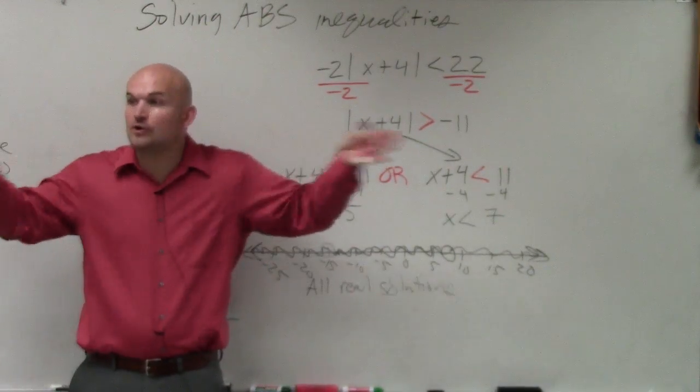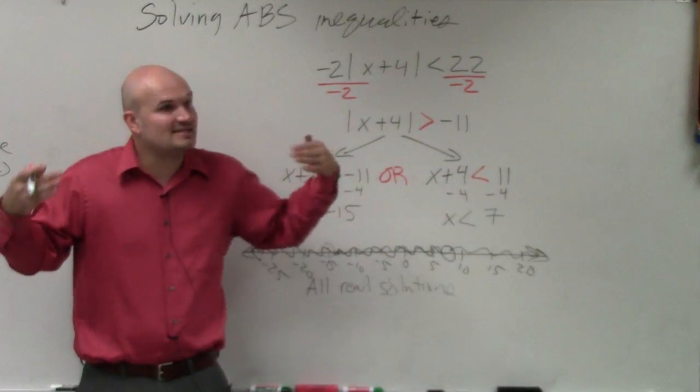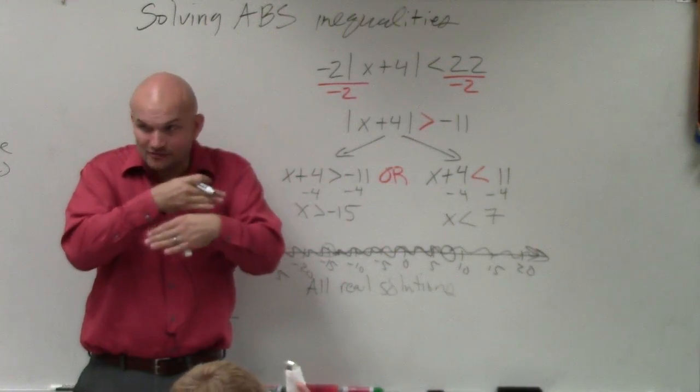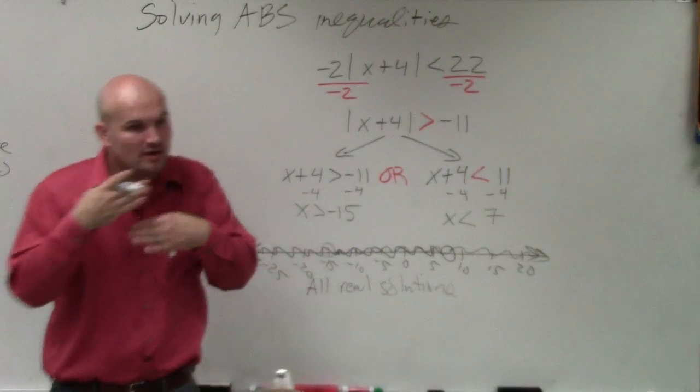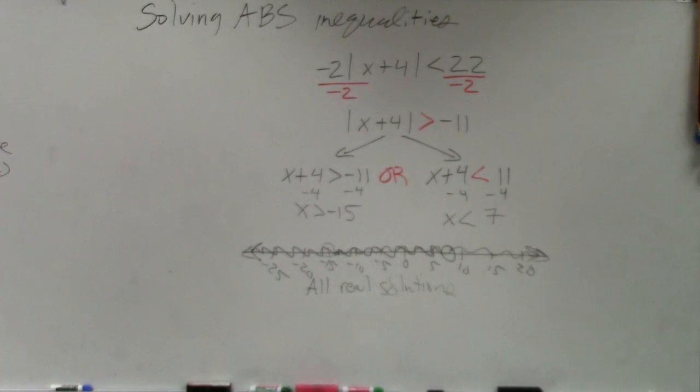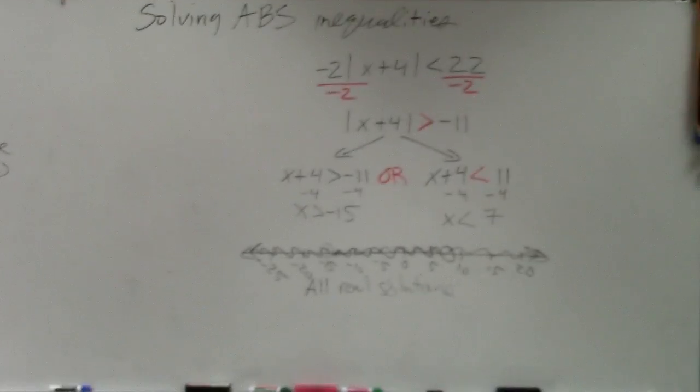Right? Usually, a lot of times, or go in opposite directions. But in this case, they actually went towards each other. But since it's an or, we're not looking for the intersection. We're just looking for one or the other or both.